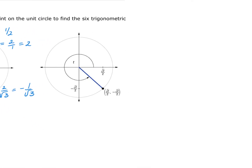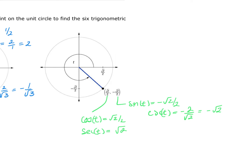For the ordered pair (√2/2, −√2/2) on the unit circle: sin(t) = −√2/2 and cos(t) = √2/2. Then csc(t) = −2/√2 = −√2, and sec(t) = √2. Tangent = (−√2/2)/(√2/2) = −1, so cot(t) = −1 as well. All six trigonometric functions are now found for those angles t.